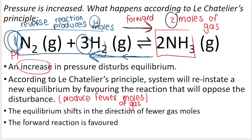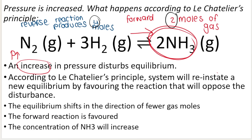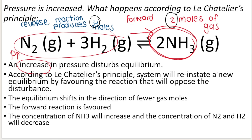What that ultimately means is: if the forward reaction is favored — that's the reaction going in the forward direction — I will be increasing the concentration of my products and also decreasing the concentration of the reactants.